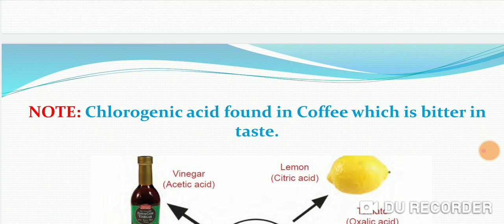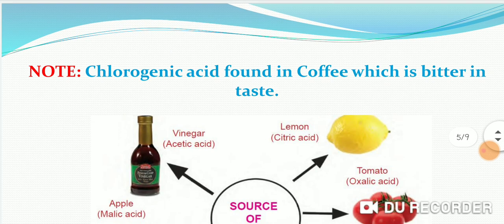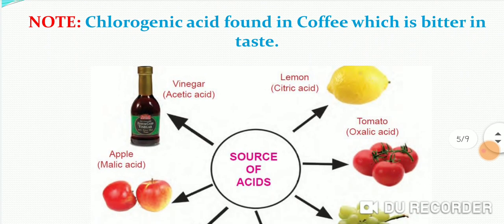Here I have mentioned a note which is important for you all. Chlorogenic is also a type of acid which is found in coffee. But it is different, it has a different taste. As we mentioned in the previous topic that the taste of acid is sour, but this is a unique acid which is bitter in taste. Remember, chlorogenic acid is found in coffee.